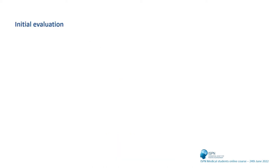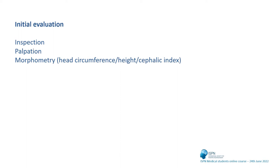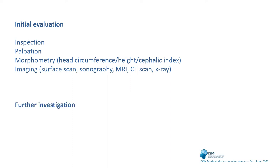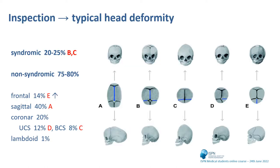The initial evaluation consists of inspection, palpation, morphometry like head circumference and height measurements as well as calculation of the cephalic index, and imaging such as surface scans, sonography, MRI in syndromic cases, and rarely CT scans and x-rays in order to avoid radiation exposure. Further investigations are ophthalmology, especially to rule out papilledema, and genetics in suspected syndromic cases. Inspection of the skull is the most important technique the neurosurgeon uses.